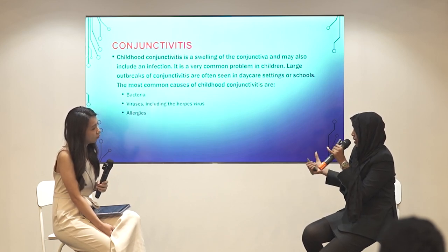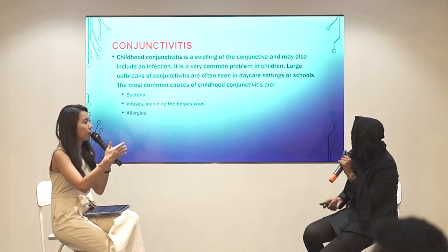Conjunctivitis is very common among children because they like to play around, touch things, and bring their dirty fingers to their mouths or eyes. This happens when bacteria, viruses, or allergies cause inflammation — basically these three things are the main causes of conjunctivitis, which means swelling of the white part of the eye. You can notice red eyes, yellowish discharge, and in the morning when they wake up these signs are very visible, purely because of bacterial, viral, or allergic reaction.